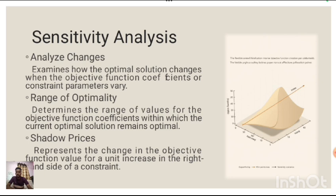Sensitivity Analysis examines how the optimal solution changes when the objective function coefficients or constraint parameters vary. Second, range of optimality determines the range of values for the objective function coefficients within which the current optimal solution remains optimal. Third, shadow price represents the change in the objective function value for a unit increase in the right-hand side of a constraint.